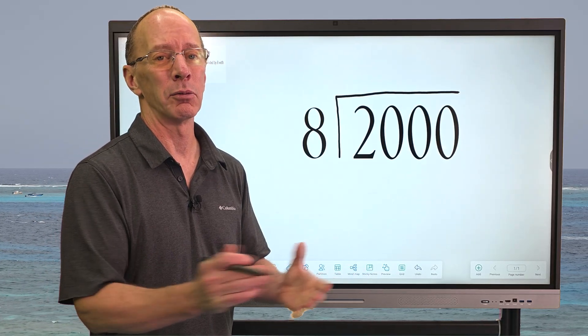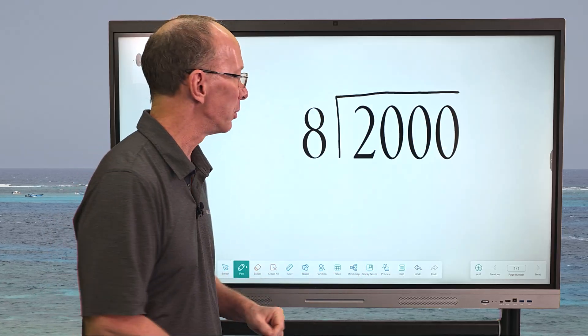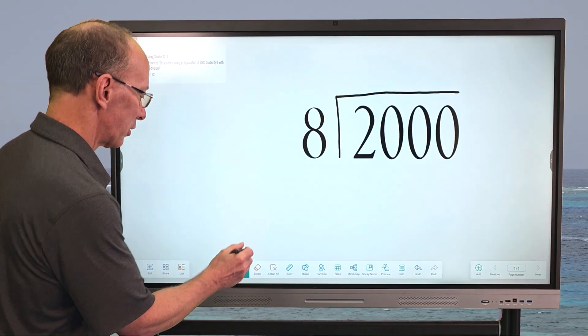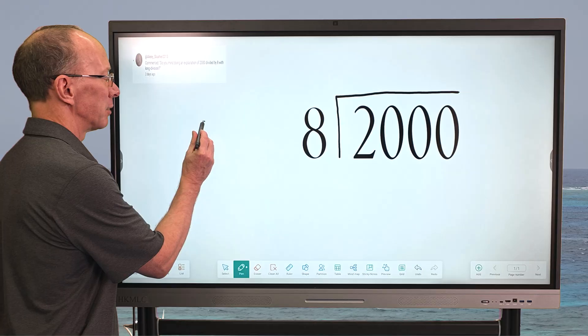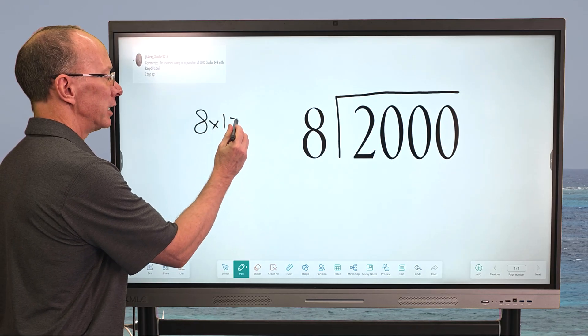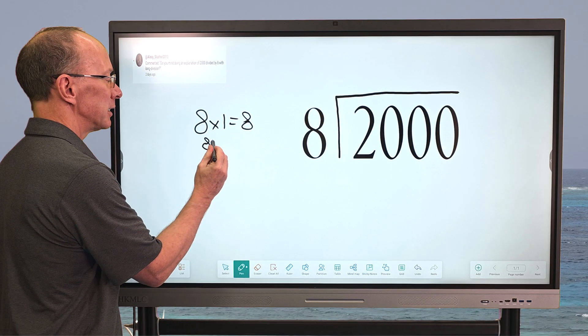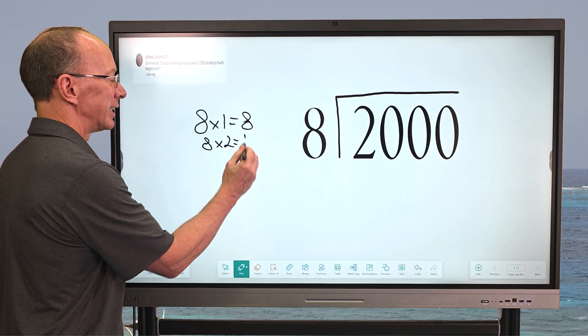If you don't have your 8s memorized, don't worry, I'm going to help you out. So off to the side, I'm going to go ahead and write a couple problems here. I'm going to do 8 times 1 equals 8. 8 times 2 equals 16.